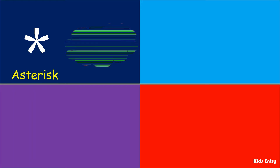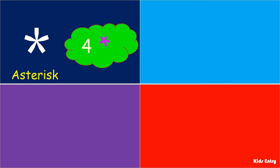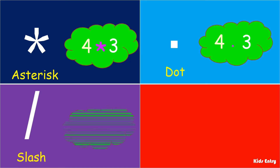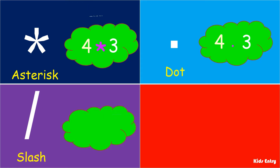Asterisk sign — this sign also refers to the multiplication operation. Dot sign — this sign also refers to the multiplication operation. Slash sign — this sign also refers to the division operation.